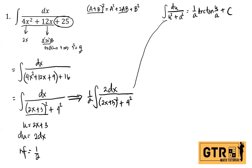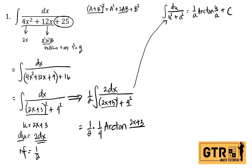This is now in the form du over u² + a², where du = 2 dx, u = 2x + 3, and a = 4. Applying the formula, the final answer is (1/2) times (1/4) times arctan((2x + 3)/4) + C, which simplifies to (1/8) arctan((2x + 3)/4) + C.